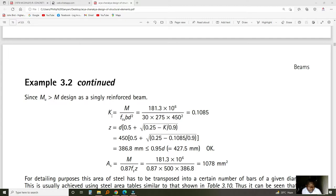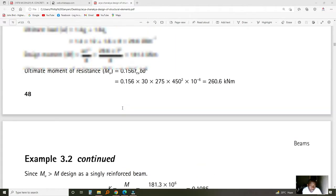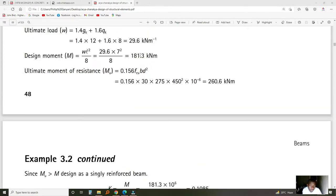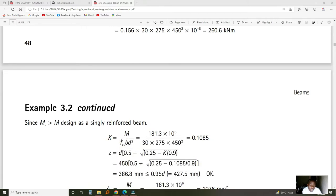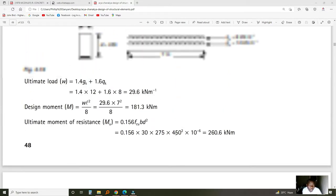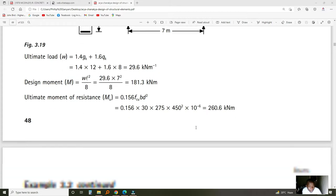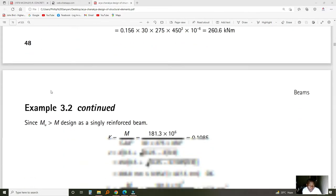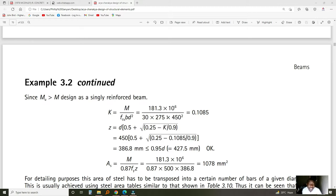Now we find the value K. K is useful so we can calculate the lever arm. K is when you take the design moment, which is 181.3. In this case, we want to change it to newtons per square millimeter, so we multiply by 10 to the power 6.